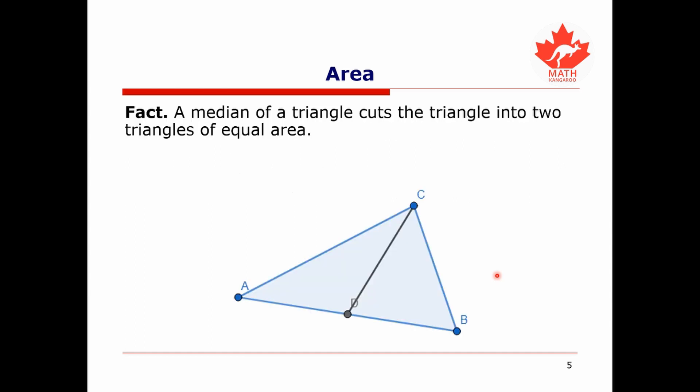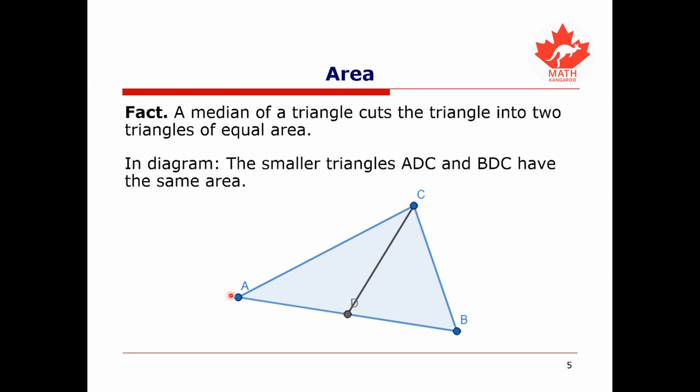A fact about area in relation to medians is that a median of a triangle cuts the triangle into two triangles of equal area. In this diagram we have triangle ABC and the median CD. The two resulting smaller triangles, ADC and BDC, must have the same area, and each is one half the area of the original triangle ABC.